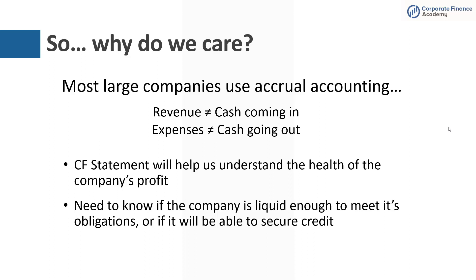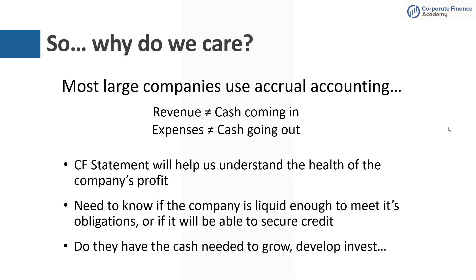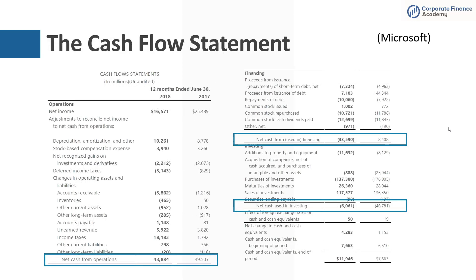You need to know if a company is liquid enough to meet its obligations — can it pay its creditors? And you also want to know if they have the cash to grow and develop: can they invest in new products and new business? Here is an example cash flow statement from Microsoft, showing net cash from operations, financing, and investing, giving you an overarching view of what the cash flow statement looks like.